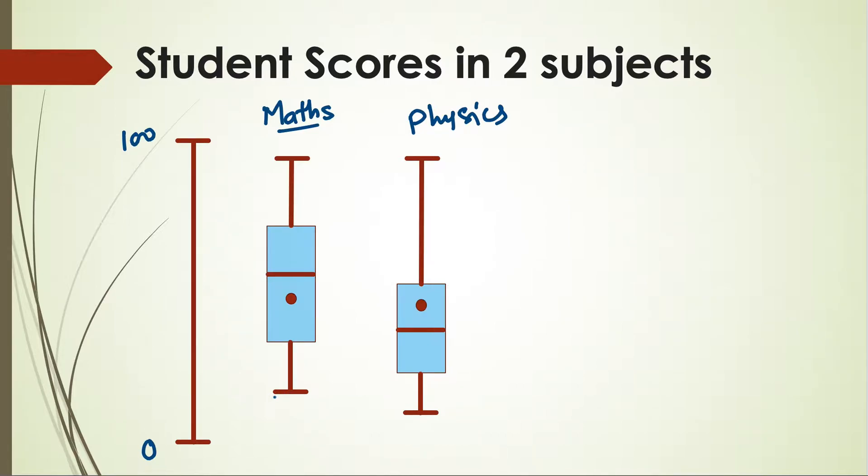In Maths, the minimum was somewhere around here, maybe 10, and maximum was around 95. In Physics, you can also see that maximum is around the same as the maximum of Maths, so let's say for Physics also maximum is 95. Here the minimum was 10, but for Physics it was a tough paper and let's say the minimum is 5.